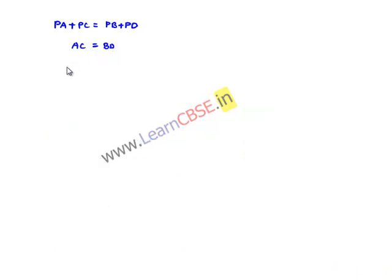Therefore, finally, we have proved that diagonals AC and BD are equal. This is the required proof.